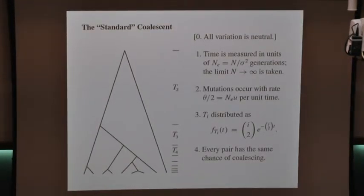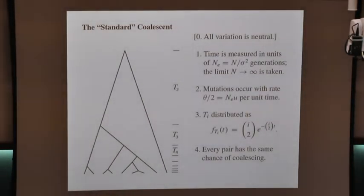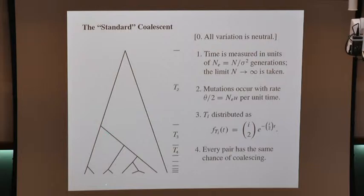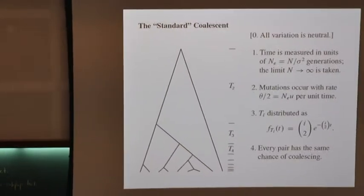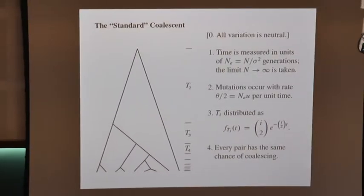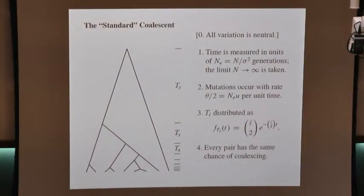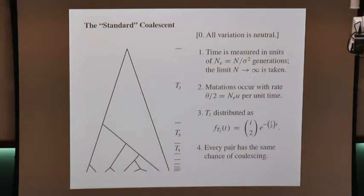Here's the standard coalescent we all know about. The point is that the tree here has only binary mergers as I follow lines backward in time — something we derived for the Wright-Fisher model in the limit as n goes to infinity. I'll also point out the distribution of coalescence times, which depends on i-choose-2 when there are i lineages. Both of these things are going to change in this talk: there will be a different distribution of times between coalescent events and trees that can have multiple mergers.